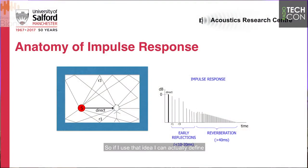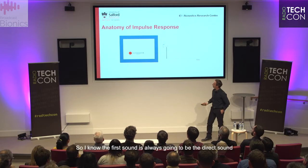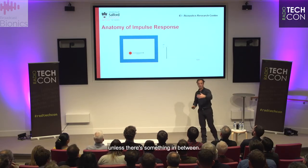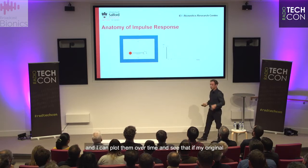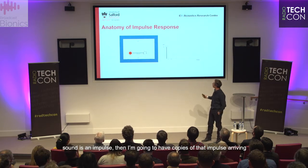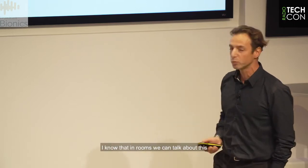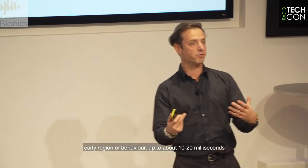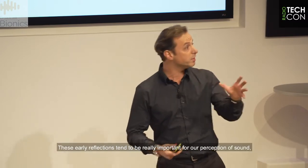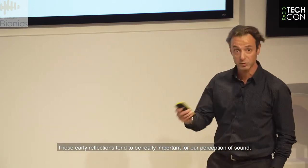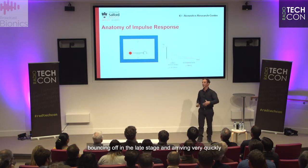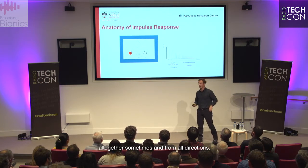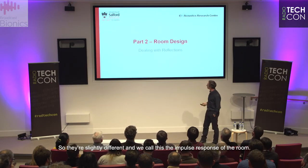Using this approach, I can define the response of a given source-receiver-room system over time. The first sound is always the direct sound. Then all the reflections appear, and I can plot them over time — if my original sound is an impulse, I get copies arriving progressively. In rooms, we talk about an early region up to about 10 to 20 milliseconds, which we call the early reflections. These are really important for our perception of sound in small rooms. After that, reflections arrive from all directions very quickly — we call the overall response the impulse response of the room.